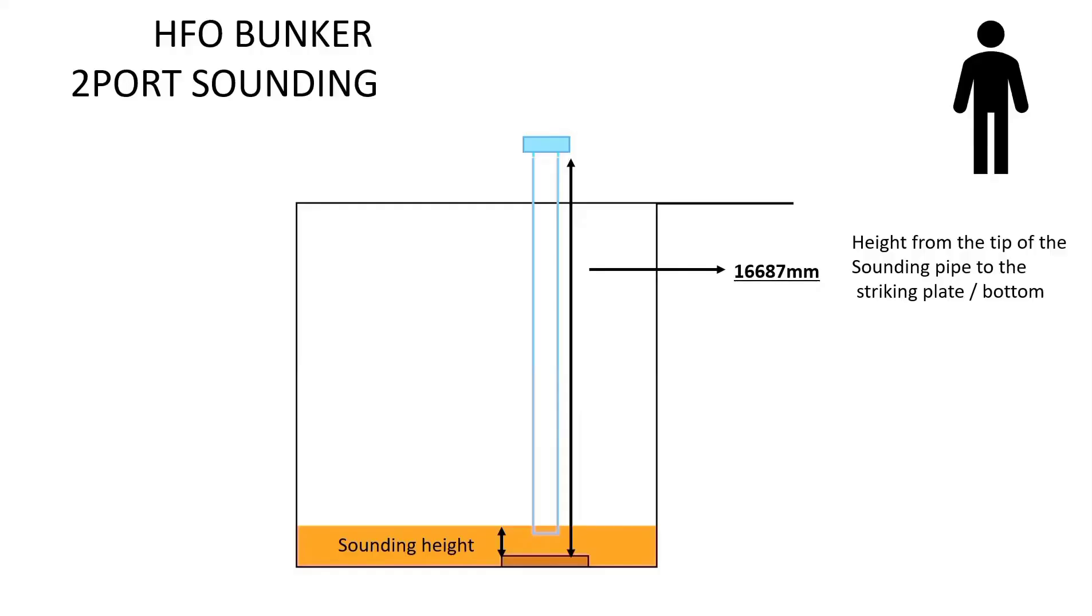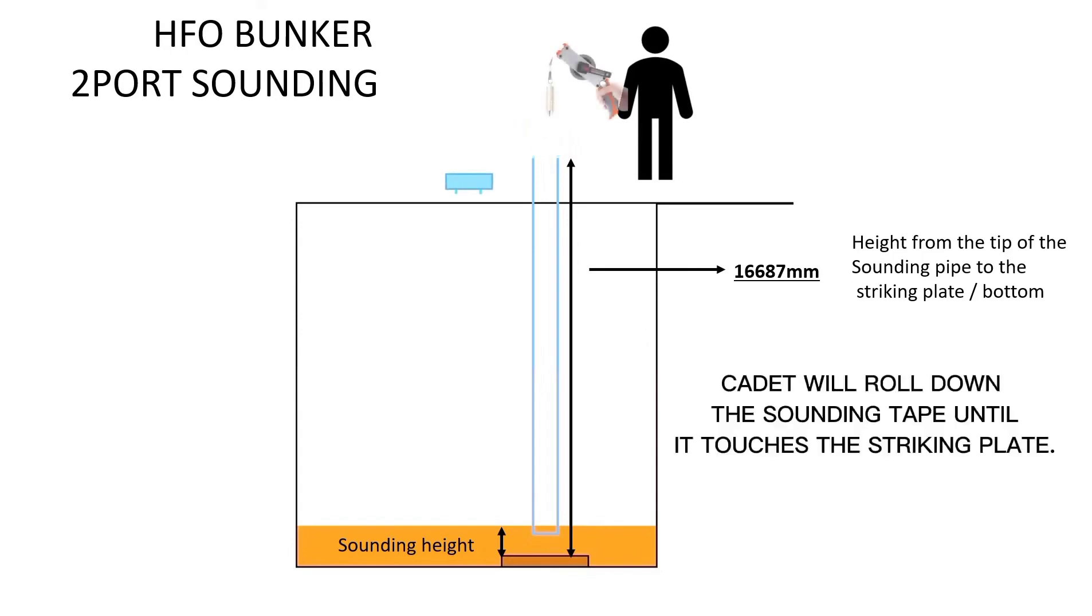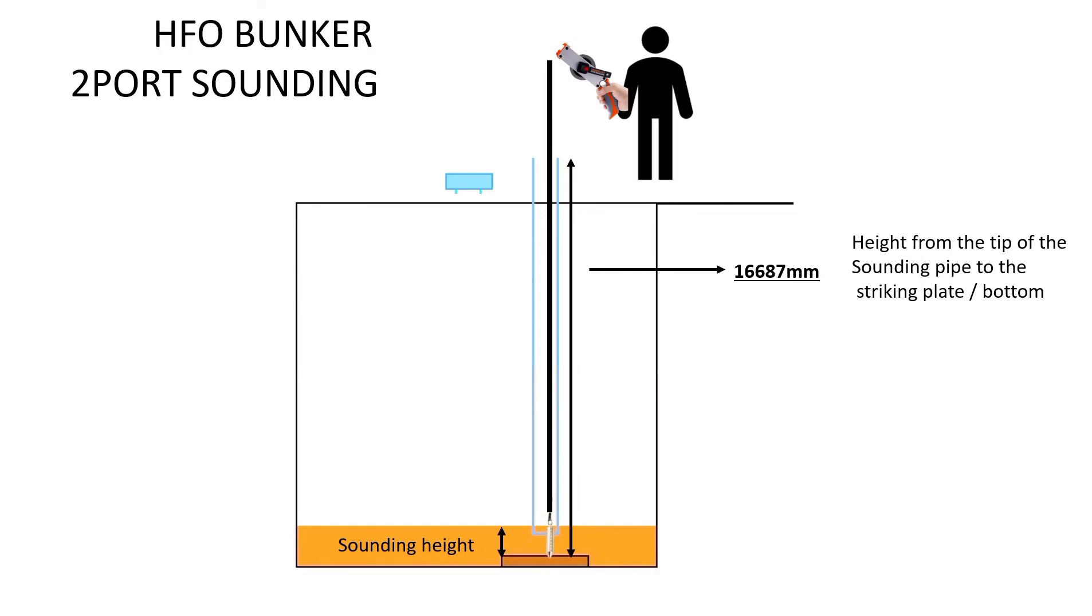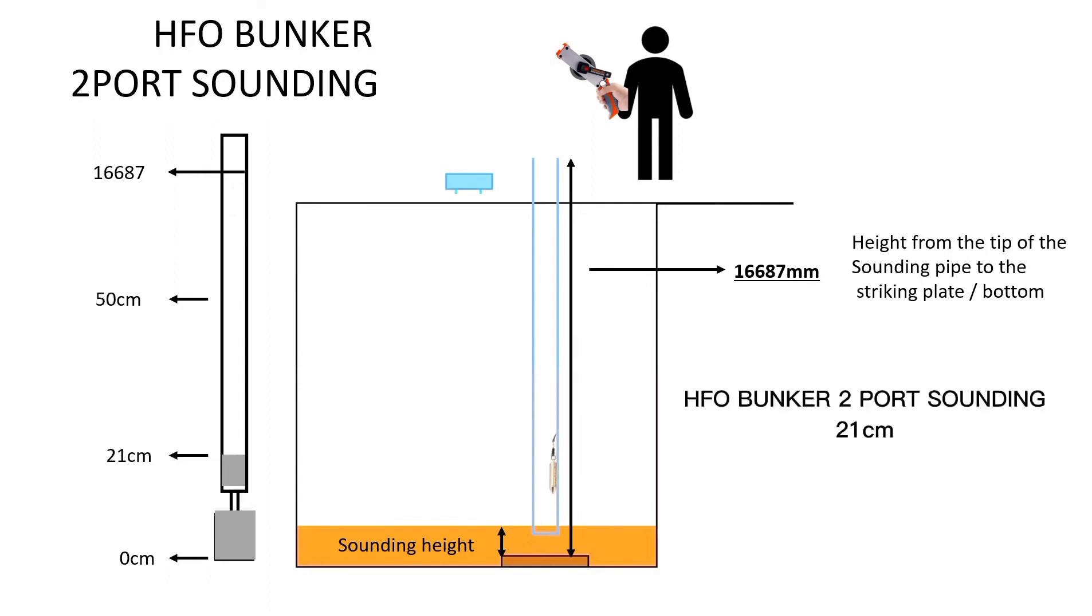Cadet is also tasked to sound the HFO bunker tank 2 port. 11687 centimeter is the height from the tip of the sounding pipe to the striking plate. Cadet will roll down the sounding tape until it touches the striking plate. 21 centimeters measured oil in the tape. HFO bunker 2 port sounding: 21 centimeters.